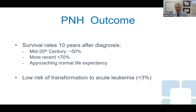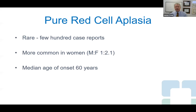With all bone marrow failure disorders, there can be a risk of transformation to acute leukemia, but in PNH this seems to be a very low risk, occurring in only a very small percentage of patients. Now we'll move on to disorders affecting just one cell type, beginning with pure red cell aplasia, which we'll go through more quickly.